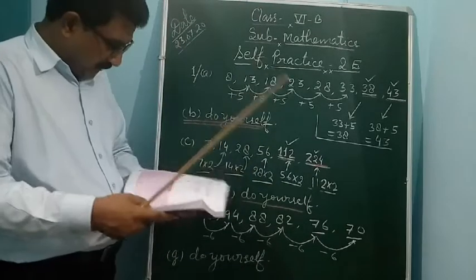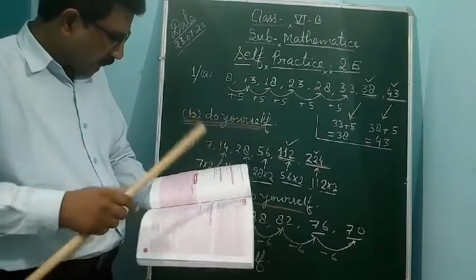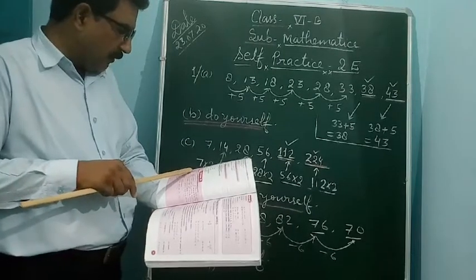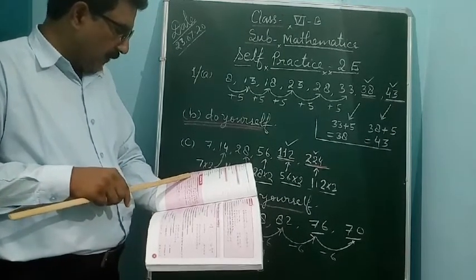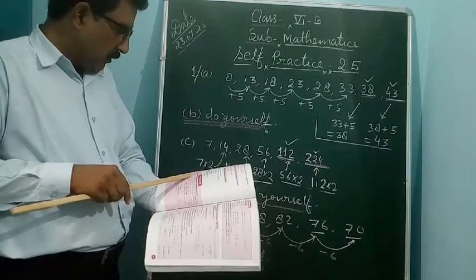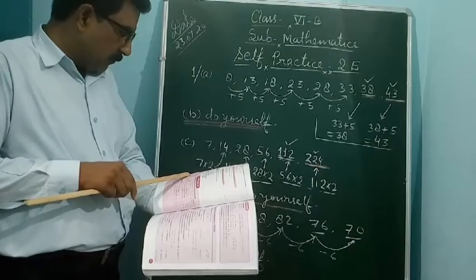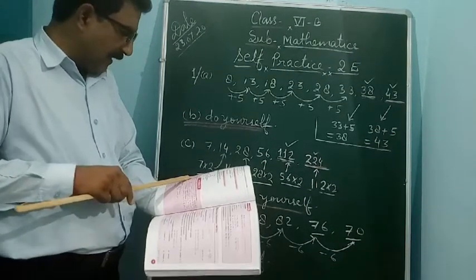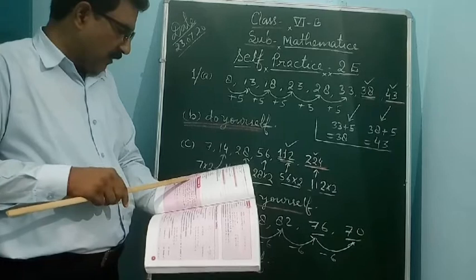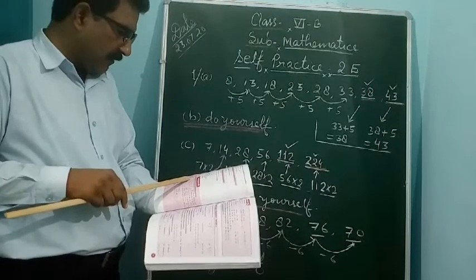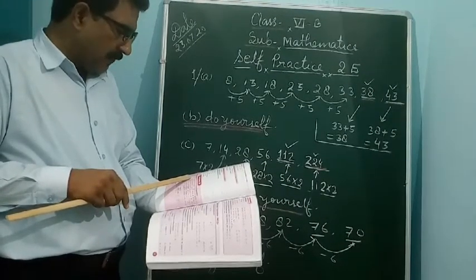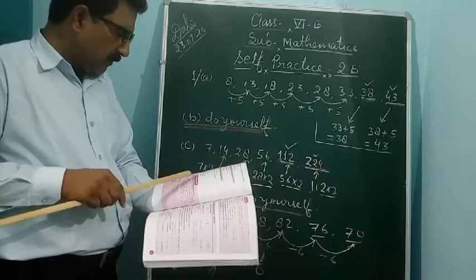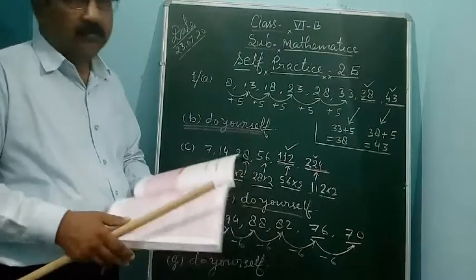Question G: It is given 15 ml, 25 ml, 35 ml, and 45 ml. The difference between 15 and 25 is 10, so it is increasing by 10. So: 45 plus 10 is 55, and 55 plus 10 is 65. It is very simple — you can do it yourself.